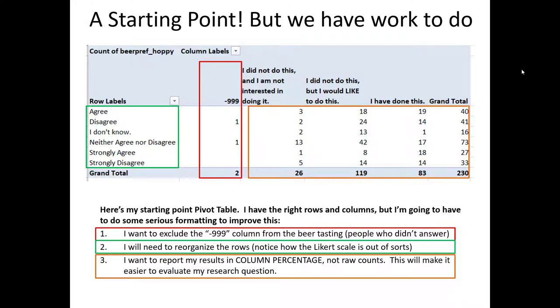And lastly, we don't want to actually report the count of observations. Remember, our question is about whether or not people who have been to a tasting room tend to prefer more hoppy beer. So it's not really an issue of raw counts of observations, but instead relative propensity. What's going to be most appropriate for us here is to report these values as a column percentage. So each one of these columns will have a grand total of 100%. And each one of the values in each one of the columns will represent the percentage of individuals who agree or disagree to the hoppiness question based on their attendance or non-attendance of a tasting room.